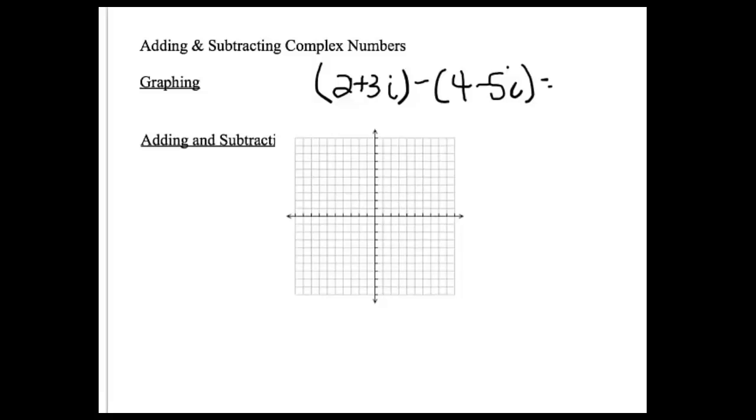You should be thinking, maybe you want to write down on your paper what you are pretty sure that the answer is. In this case, since I'm doing something graphically, I think I would like to think of subtraction as another form of addition. So I could rewrite this as 2 plus 3i plus negative 4 plus 5i.